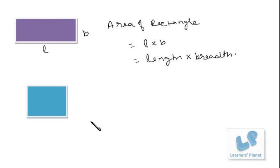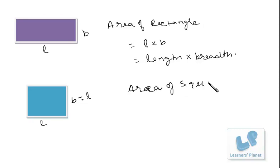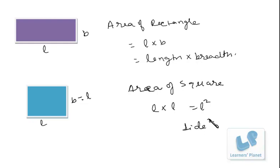Now this is a square. This is also one sort of rectangle, but it will have all the sides as the same. So this is length and this is breadth, but breadth in this case will be equal to length. So area of a square will be equal to length into length, that is length squared, or we can say side squared.